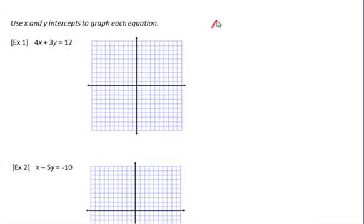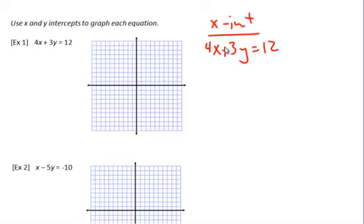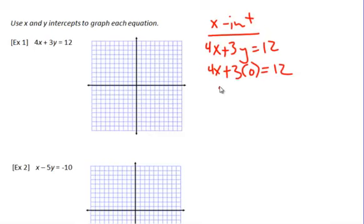To find the x-intercept, remember we need to make y zero. So I'm going to rewrite the equation: 4x plus 3y equals 12. I'm going to make y into a zero because whenever the line crosses the x-axis, y is always zero. So it's 4x plus 3 times zero equals 12. Three times zero is just zero, so it's actually just 4x equals 12. Divide by 4, x equals 3.